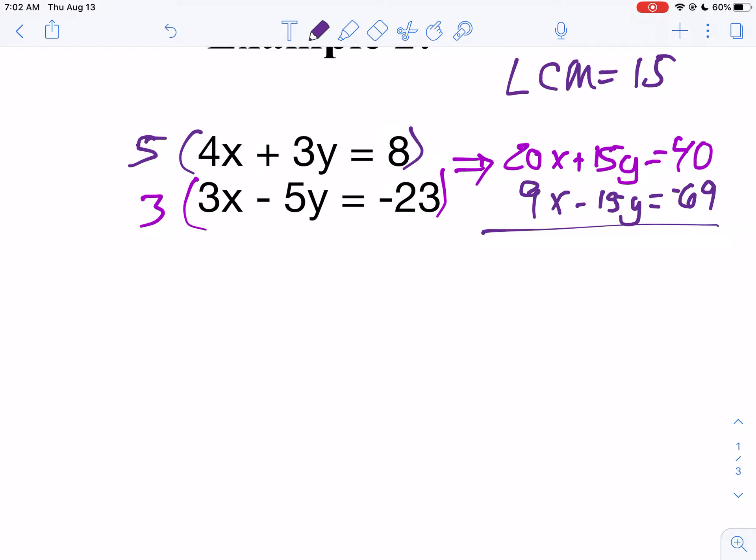Now let's add them up. So 20 plus 9 is 29x. My y's cancel. That's what I wanted to happen. 40 minus 69 is negative 29. Which means x is negative 1, because 29 times negative 1 is negative 29.